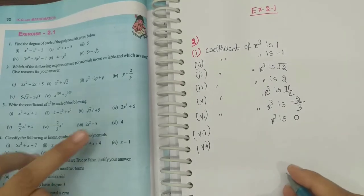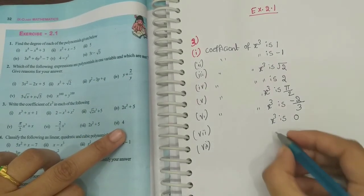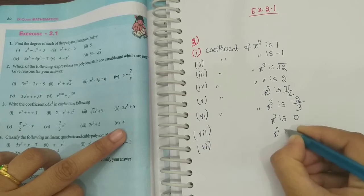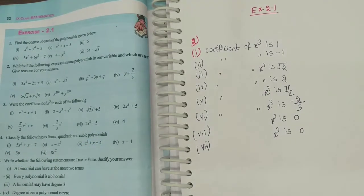Seventh one: here we have just a constant number with no variables, so the coefficient of x³ is 0.